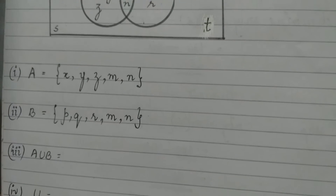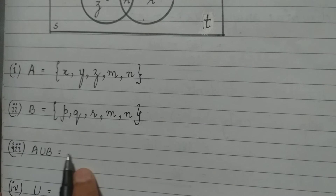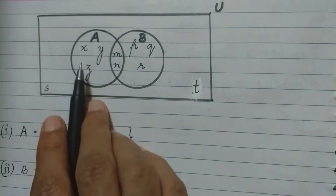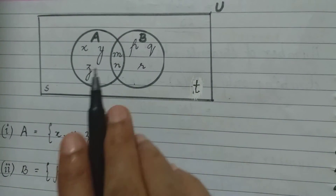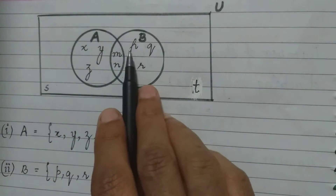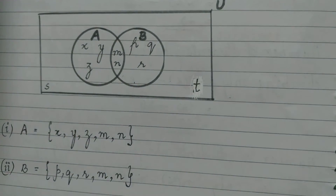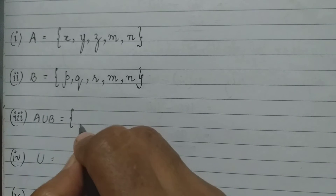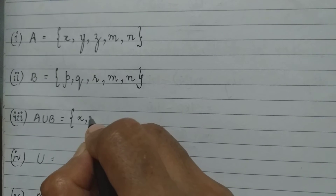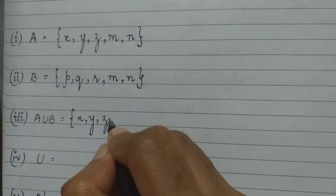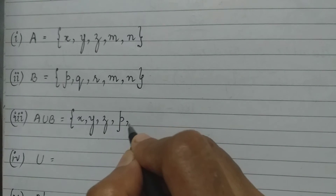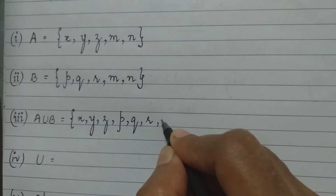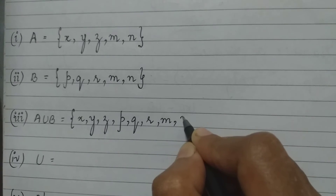Then I have A union B. A union B will be all the elements in set A and set B. That will be X, Y, Z, P, Q, R, M, and N. So A union B will consist of the elements X, Y, Z, P, Q, R, M, and N.